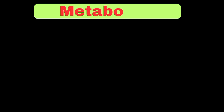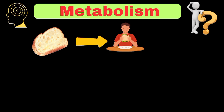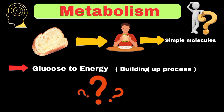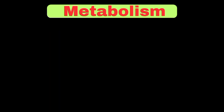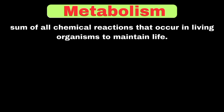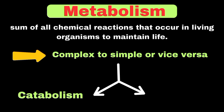Now it's time to cover metabolism. When we eat a piece of bread, our digestive system breaks it down into simple molecules like glucose — a breakdown process. Then our cells either use this glucose for energy or convert it into fat for storage — a building up process. Metabolism is the sum of all chemical reactions that occur in living organisms to maintain life. These reactions either break down complex molecules into simpler ones, or build complex molecules from simple ones. There are two main types: catabolism and anabolism.